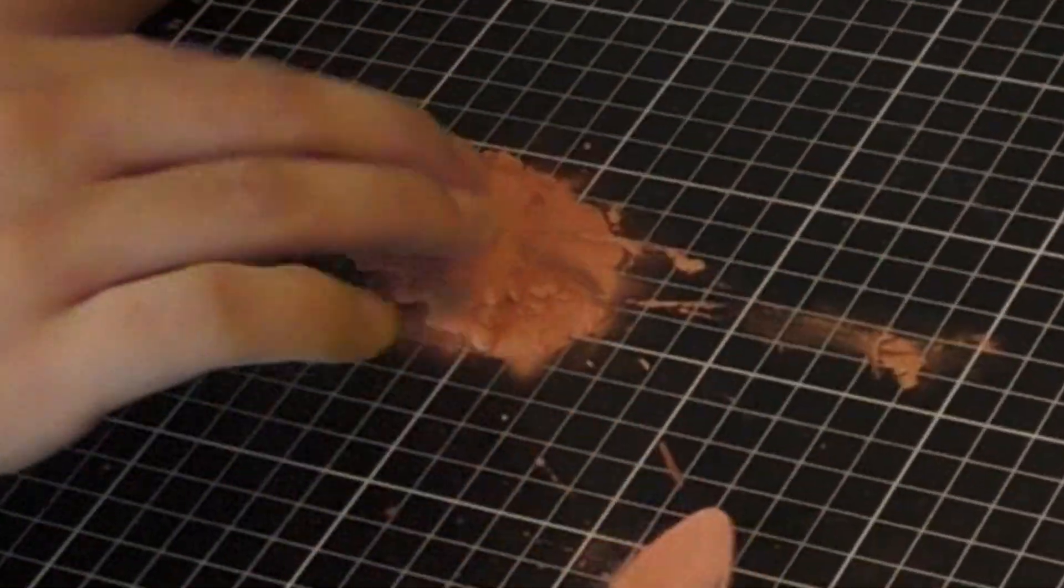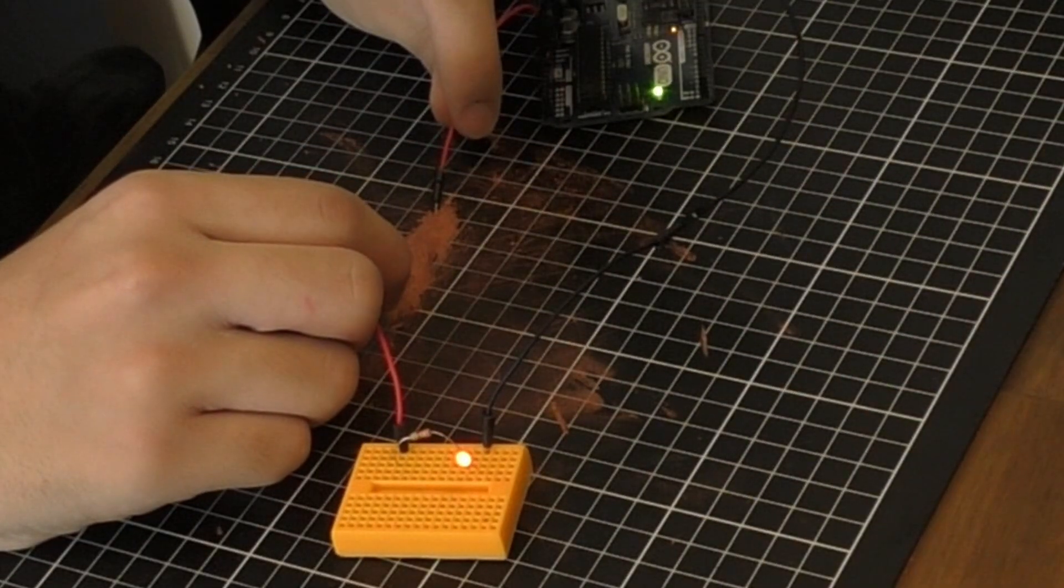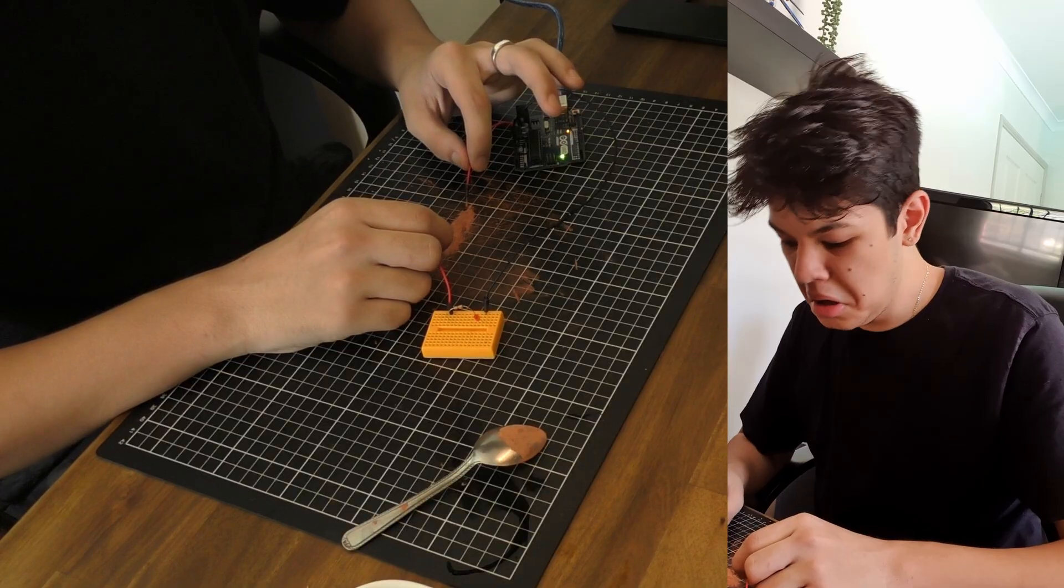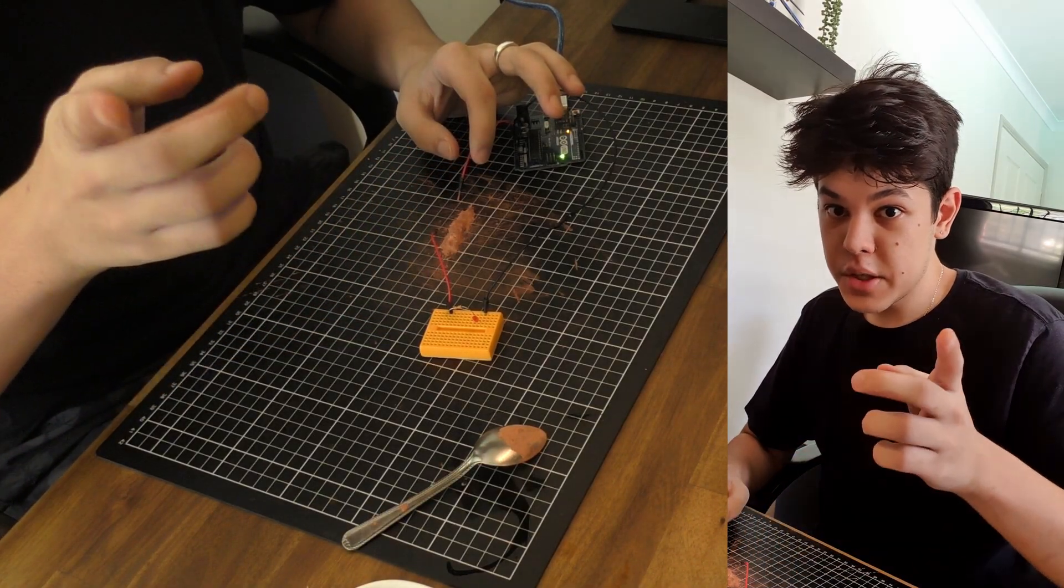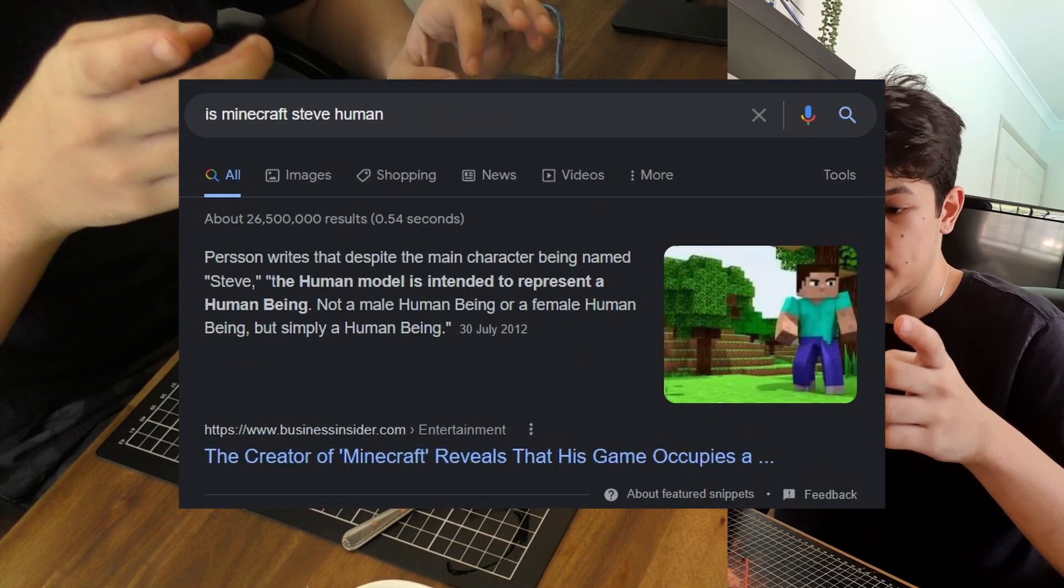Before you say there's no salt in Minecraft, well there's salt in sweat, and assuming Steve is a human, he can make salt out of his sweat. Now that I've made functioning redstone, I want to try and control this piston I made with it.